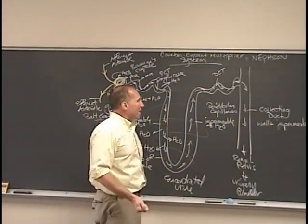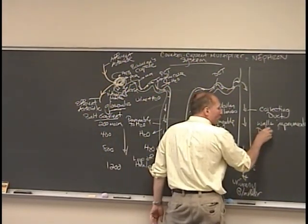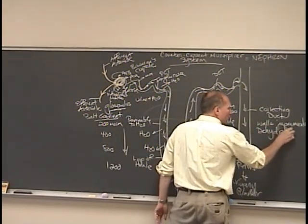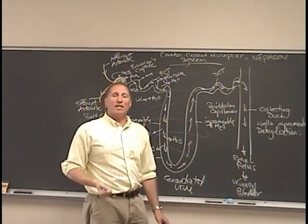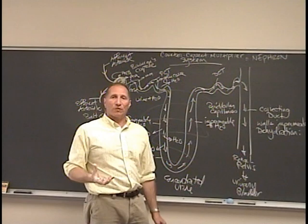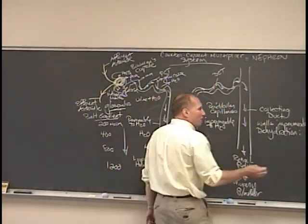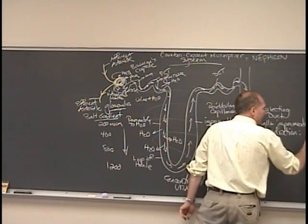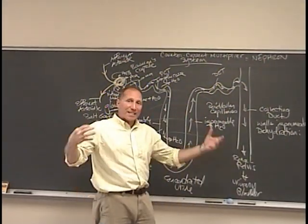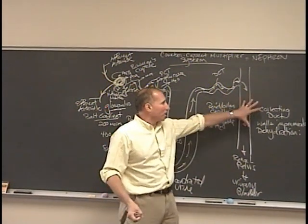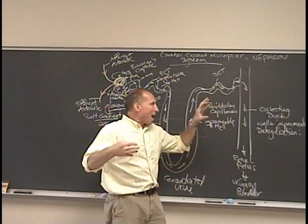But in times of dehydration, that changes. What happens is there is an endocrine gland at the base of the brain called the pituitary gland, and the posterior portion of that secretes a very important hormone called ADH, anti-diuretic hormone. And what anti-diuretic hormone does is it causes the collecting duct walls to become permeable to water.